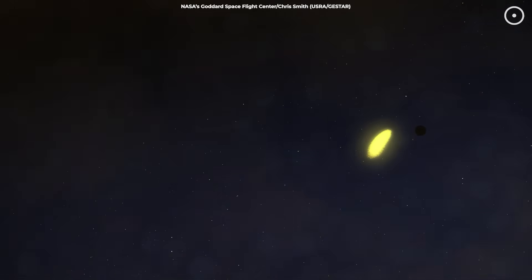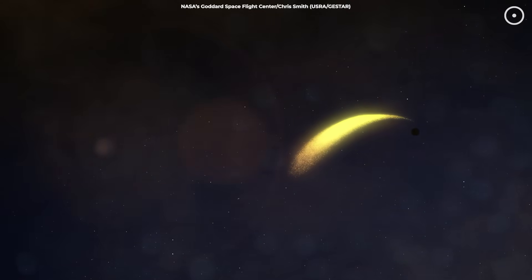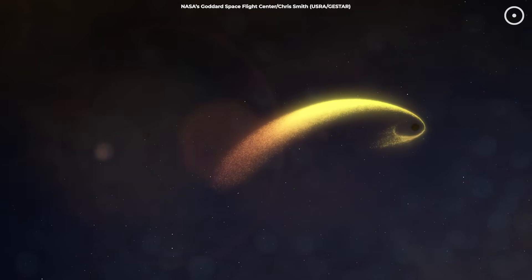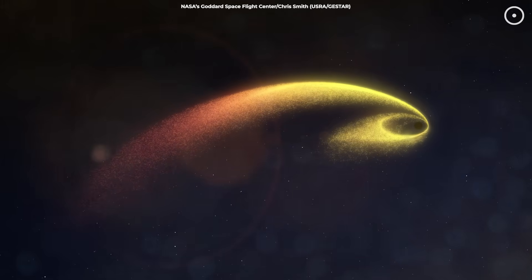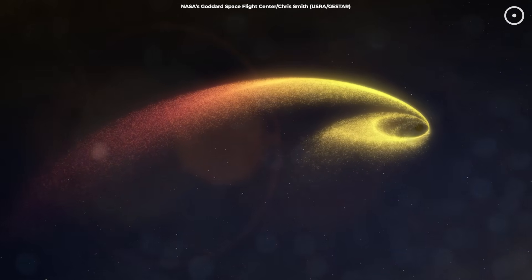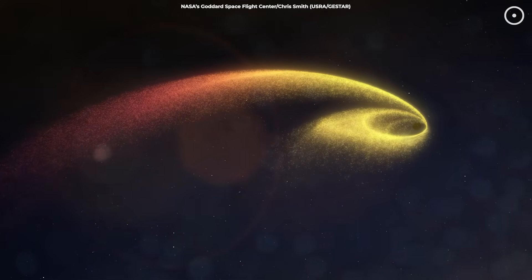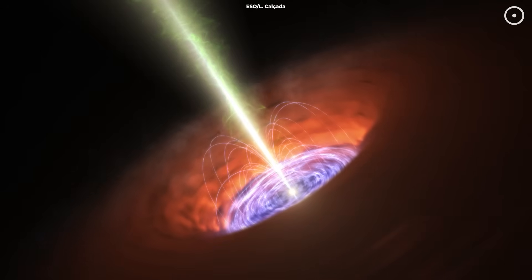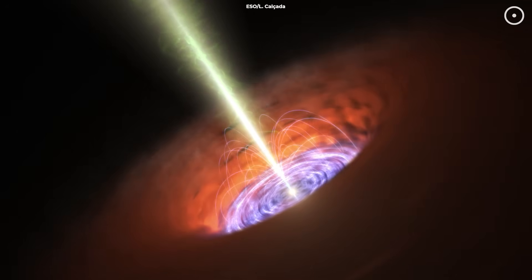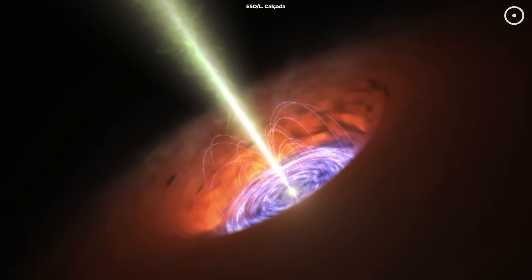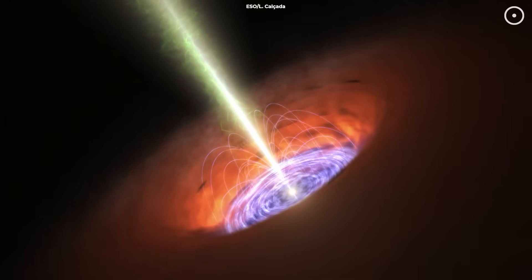When a black hole feeds, the matter spiraling toward it forms an accretion disk, a swirling ring of superheated gas and dust. As the material gets closer, it's compressed and heated to millions of degrees. But instead of everything falling into the black hole, some of this energy escapes along the black hole's magnetic poles, creating massive beams of particles and radiation.